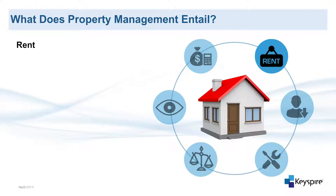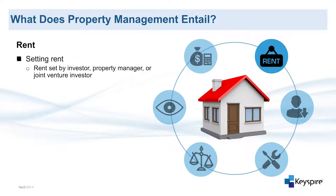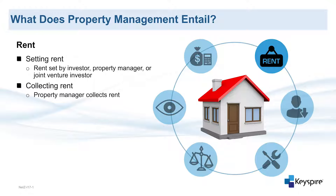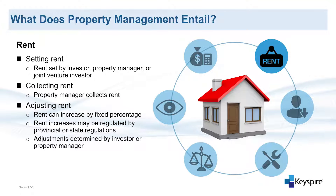The first major responsibility is rent, including setting rent, collecting rent, and adjusting rent as necessary. Depending on the specific situation, the rent would be set by either the investor, the property manager, or the joint venture investor. From there, the property manager would be the one who collects the rent from the tenants. Each year, the rent can be increased by a fixed percentage, depending on state, provincial, or municipal laws. Any increases or decreases to rent are determined by either the property manager or the investor, depending on the situation.